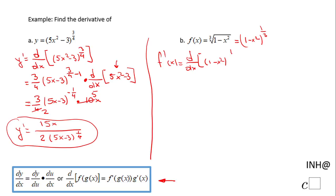This f of x, in fact f prime of x, which is going to be the derivative with respect to x of (1 - x²) to the power of 1/3. Similar to the previous part a, first of all I'm gonna use the power rule.